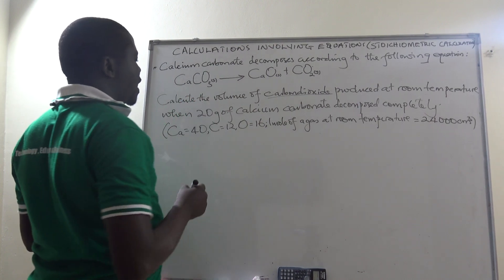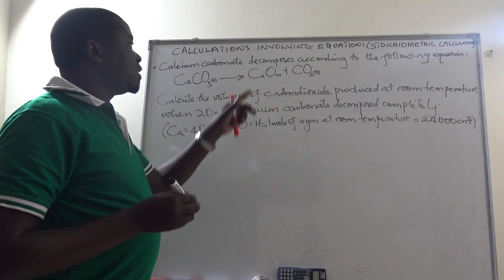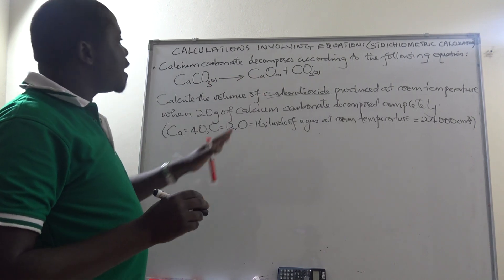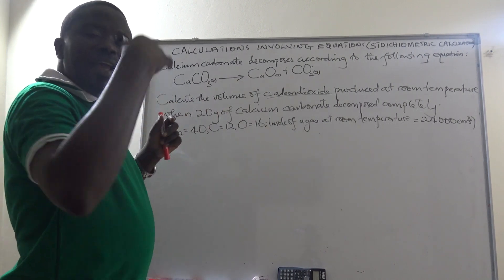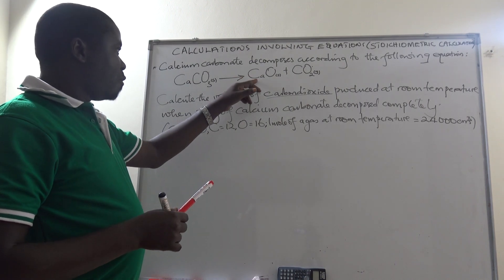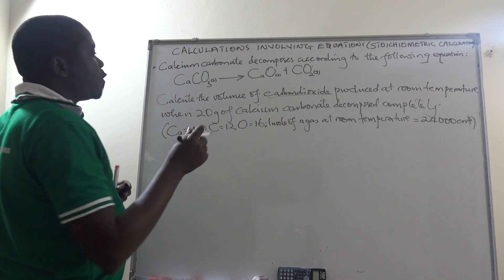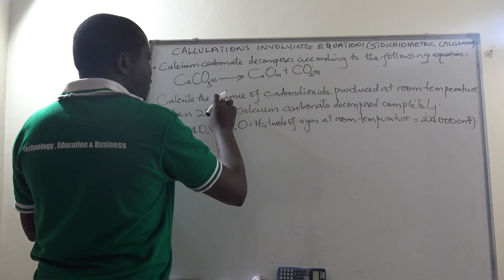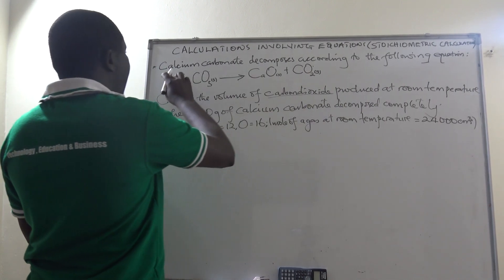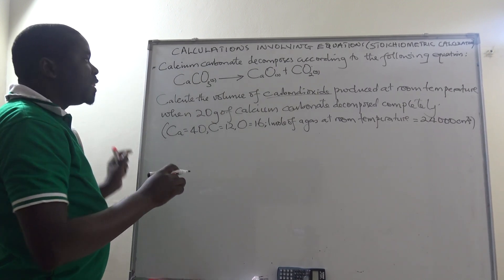We shall use calcium carbonate. The odd man out is calcium oxide — we shall not use it because it has not been mentioned and no quantity is given. For carbon dioxide we shall deal with the volume, and for calcium carbonate we shall deal with the mass.